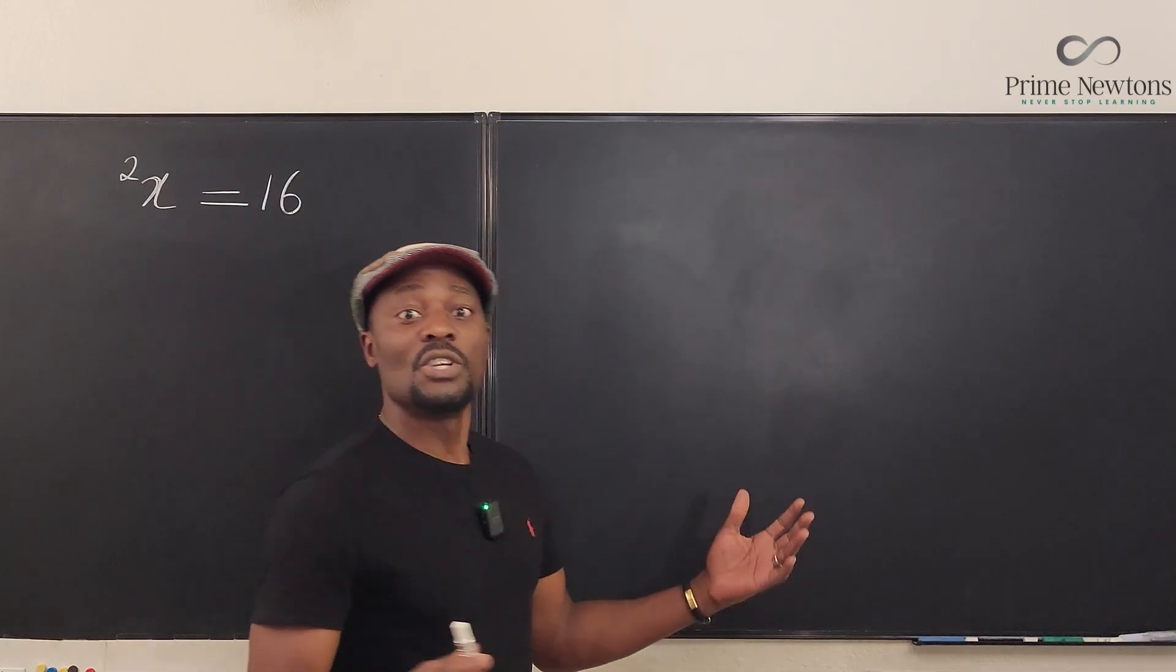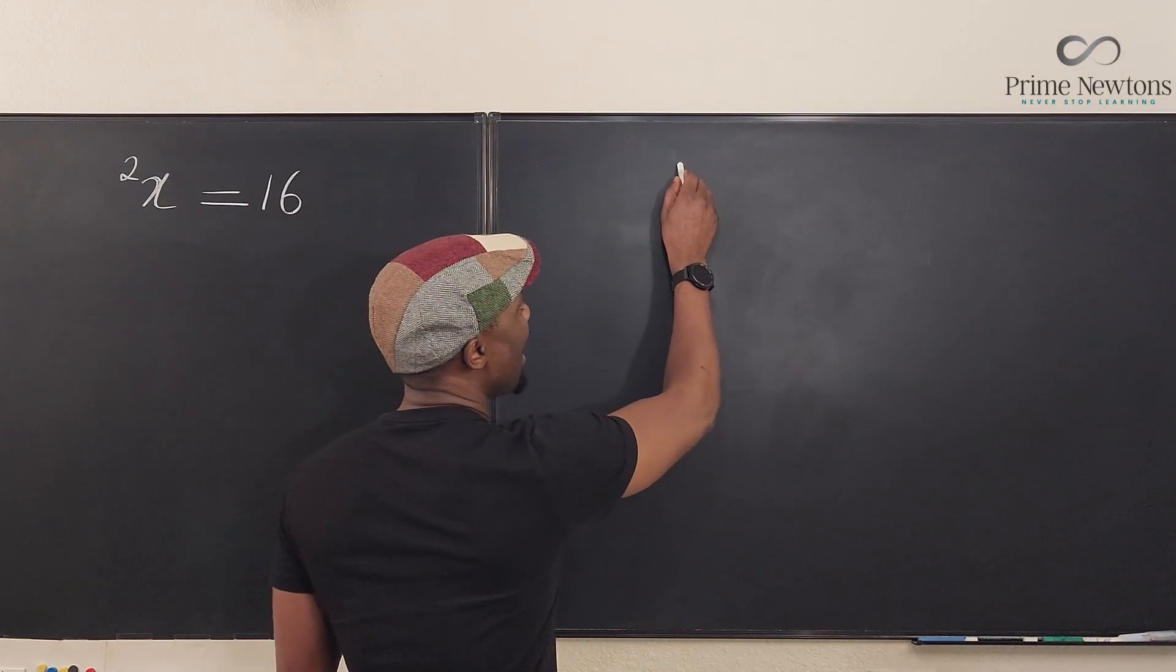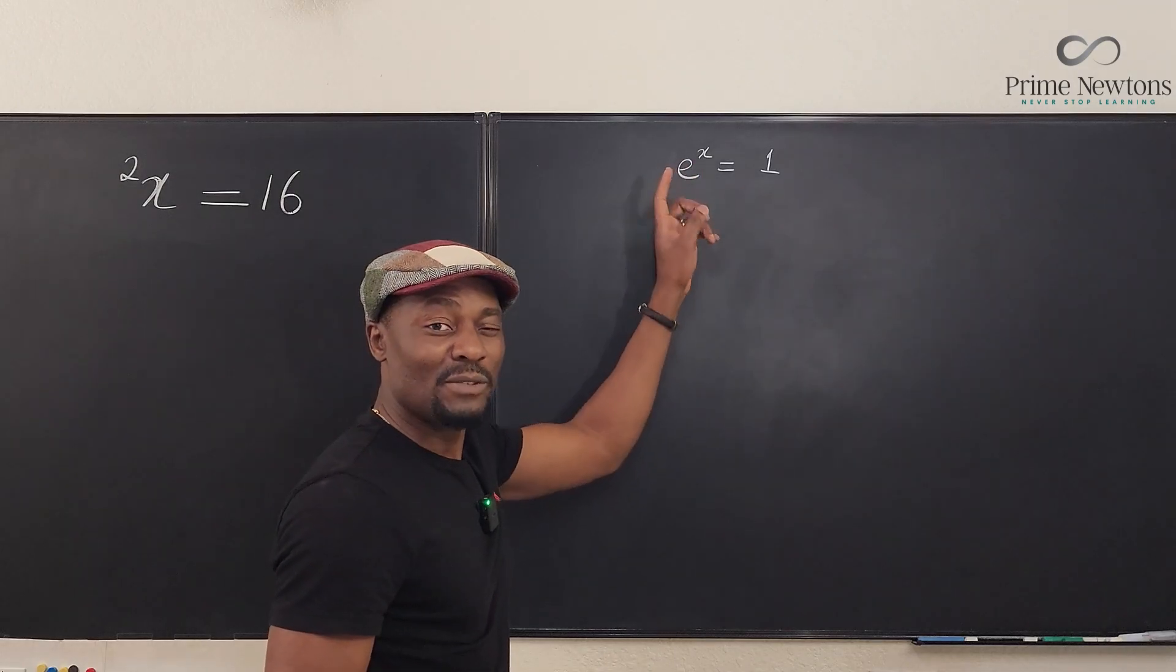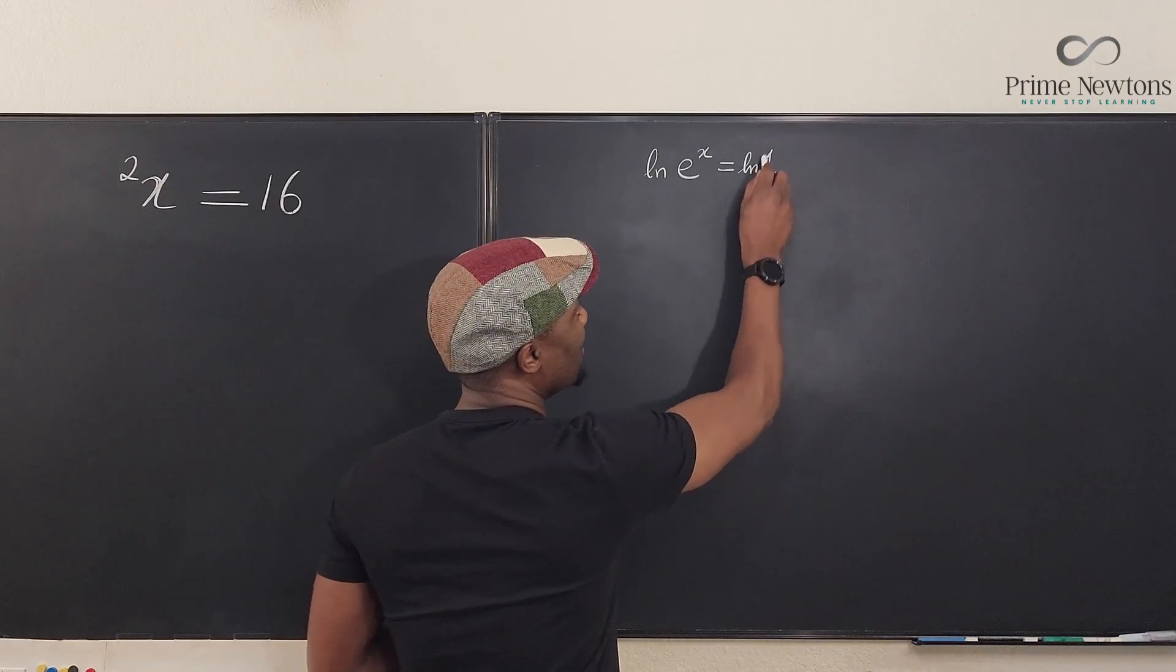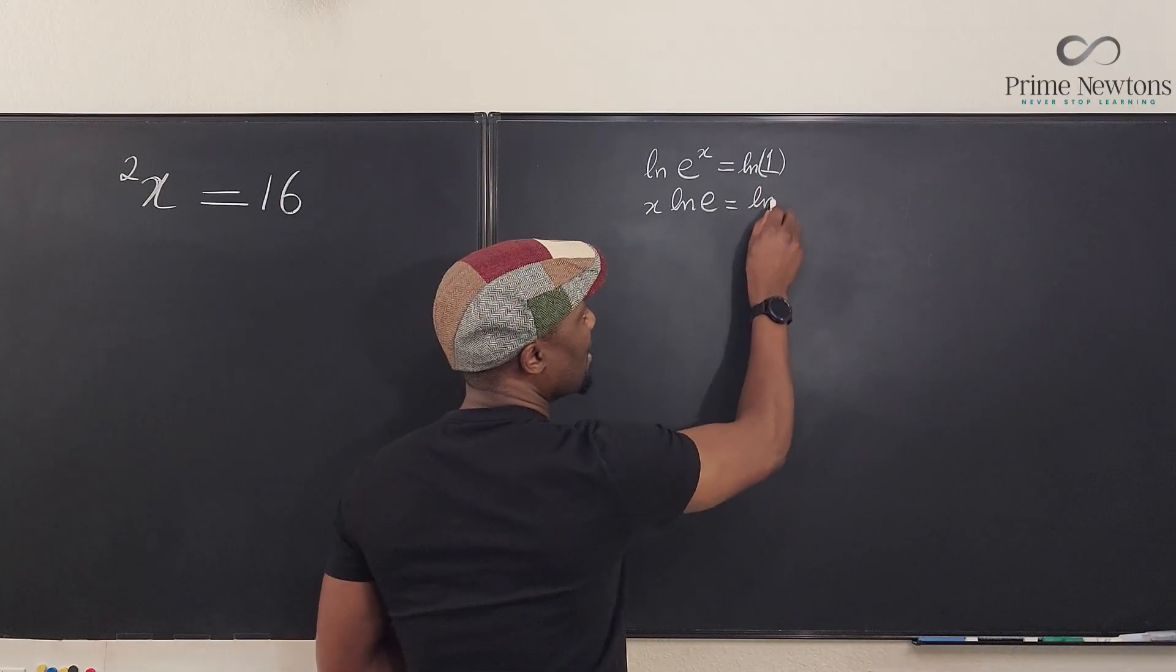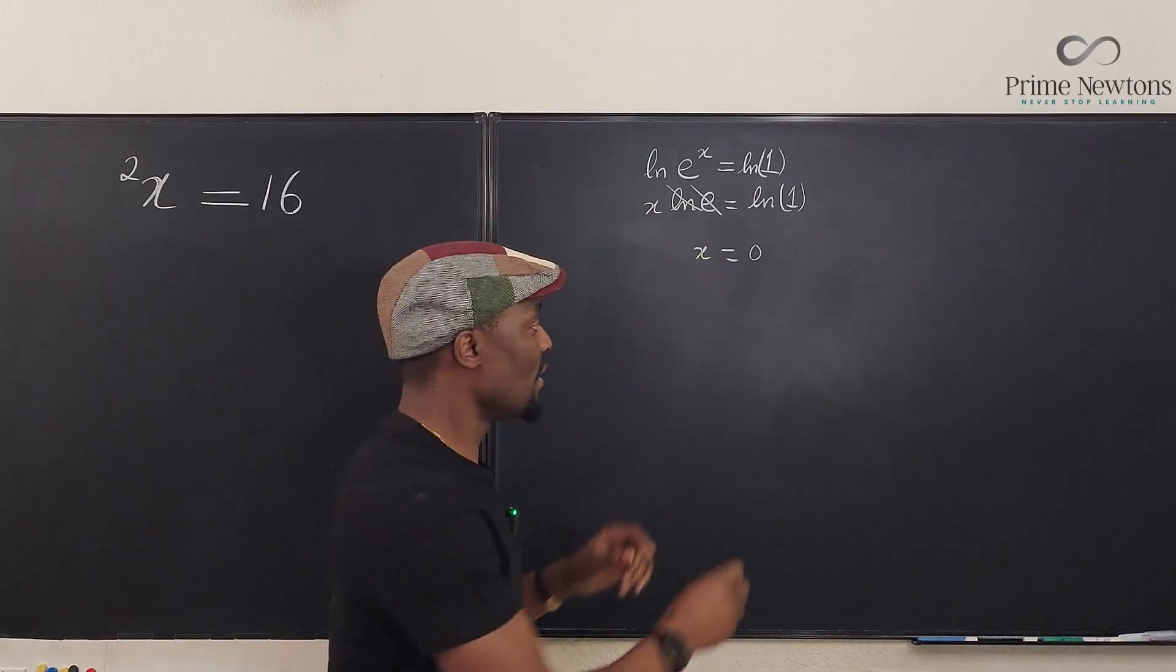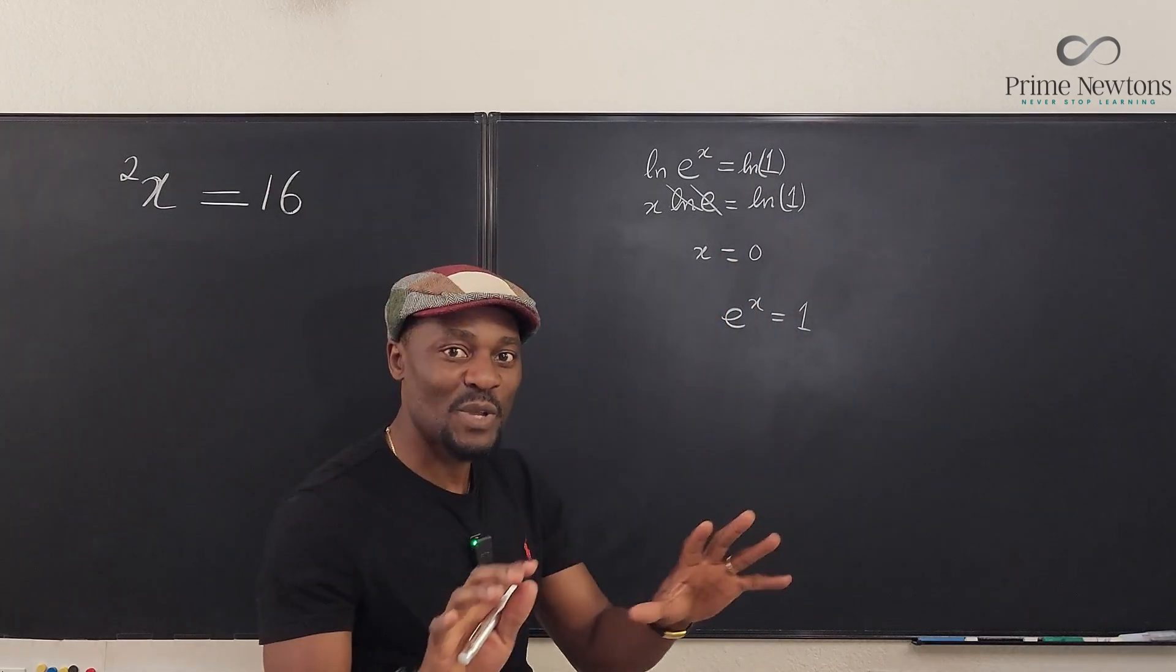Now what does the W function do? Just as if you have e to the x equals 1, for example, if you want to find x, you have to know how to take the logarithm of both sides. So if you take ln of this, ln of this, you're going to notice that this comes down as x ln of e equals ln of 1. But we know this cancels out, so what you have left is just x, and this will be equal to zero. So you know that the solution to the equation e to the x equals 1 is such that x equals zero. You see, we had to introduce natural log.